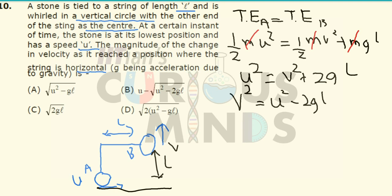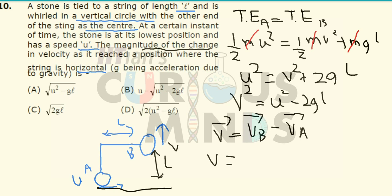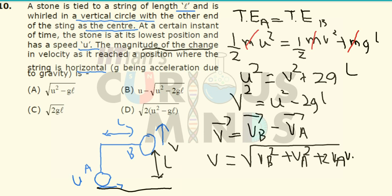Now they have asked for the magnitude of the change in velocity, which equals the vector subtraction of V at B minus V at A. The magnitude is equal to the square root of V_B squared plus V_A squared plus 2 times V_A times V_B times cos theta. From the diagram, V_A is in the horizontal direction and V_B is in the vertical direction, so the angle between them is 90 degrees, making cos theta equal to zero. Therefore, the magnitude simplifies to the square root of V_B squared plus V_A squared.